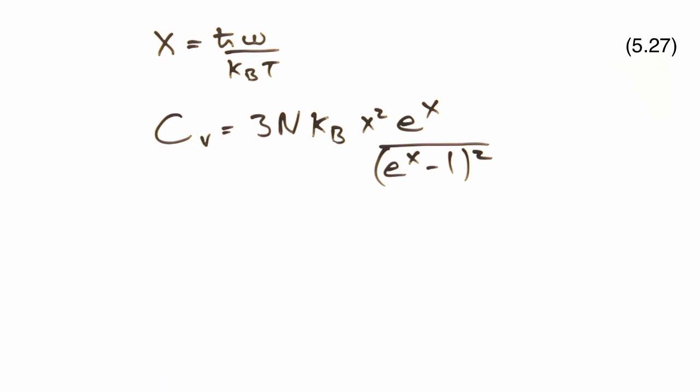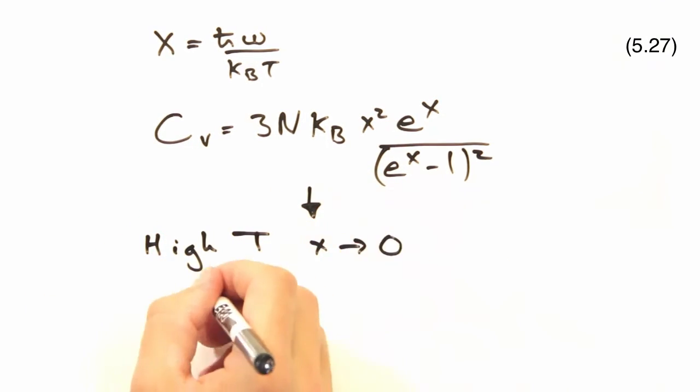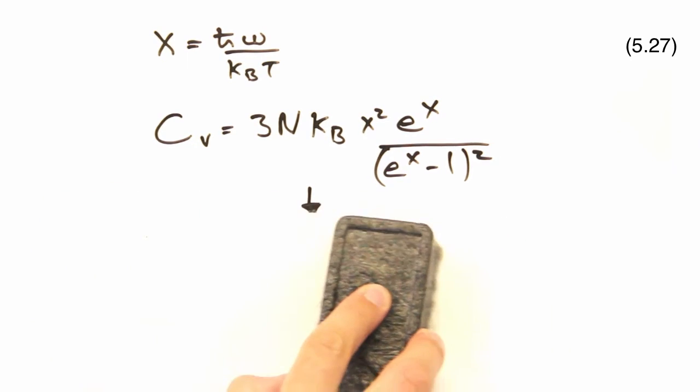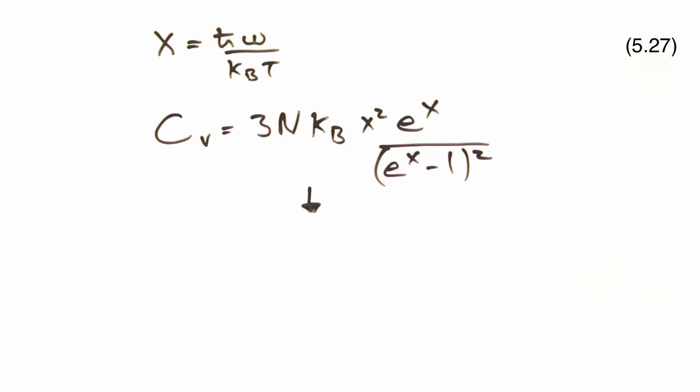Before we plot this mess of a function, it'd be a good idea to talk about the high and low T limits, and see what we can learn from them. Why don't you start with the high temperature limit? At high T, x will start to approach zero. Taking the limit of C, we end up getting 3n kB. Hey, that's the law of Dulong-Petit. So far we've got agreement with experiments, so that's a good sign.